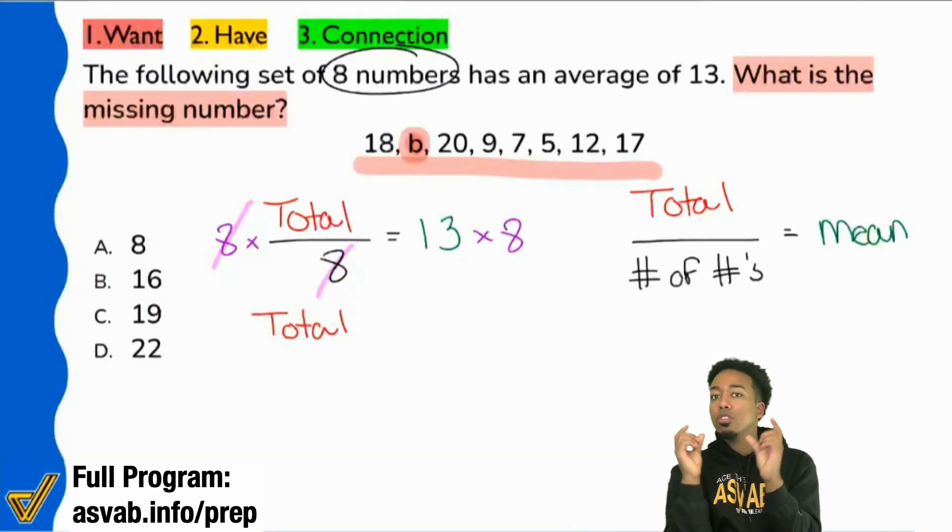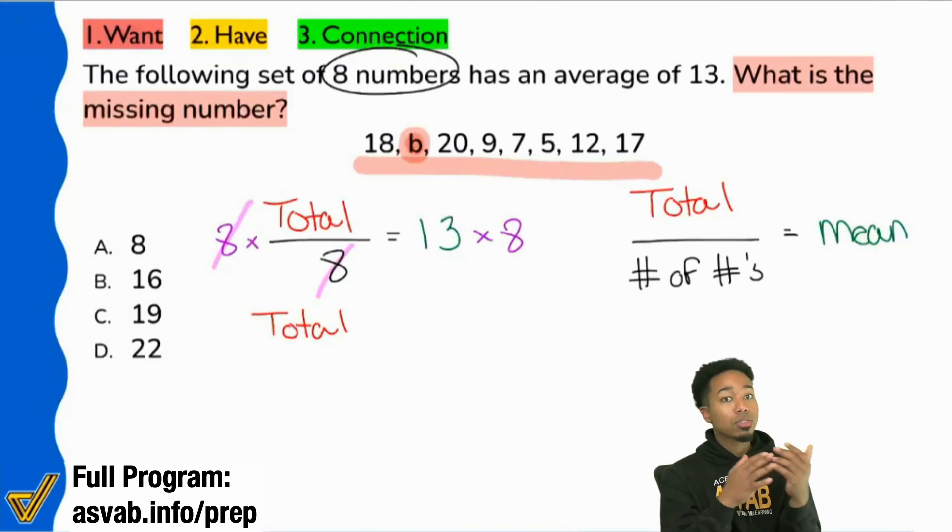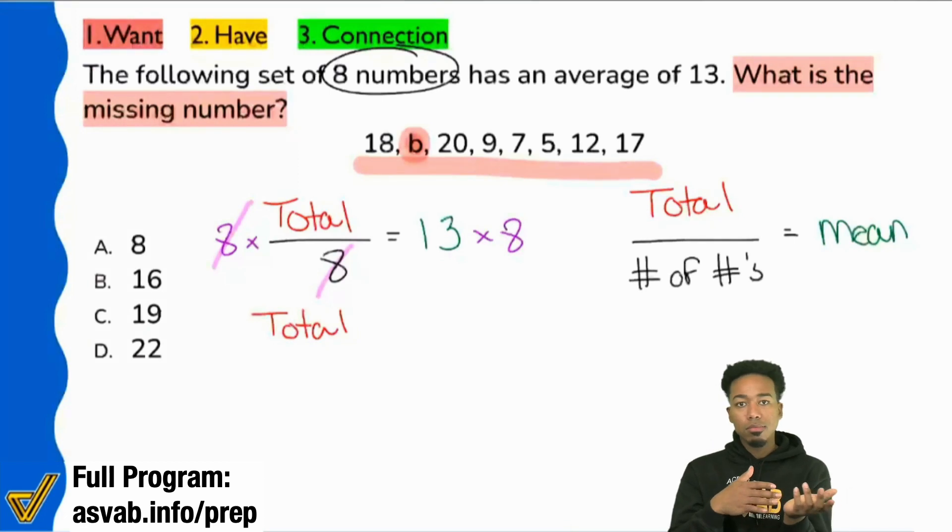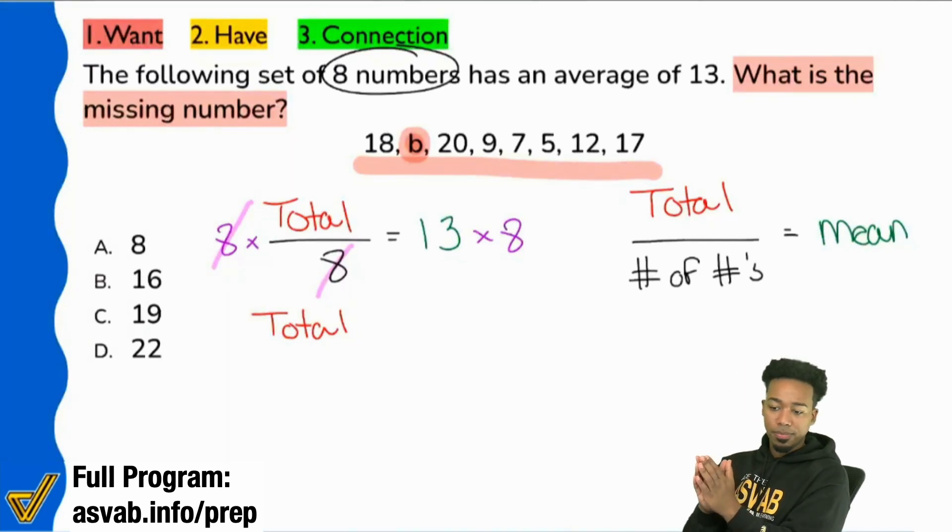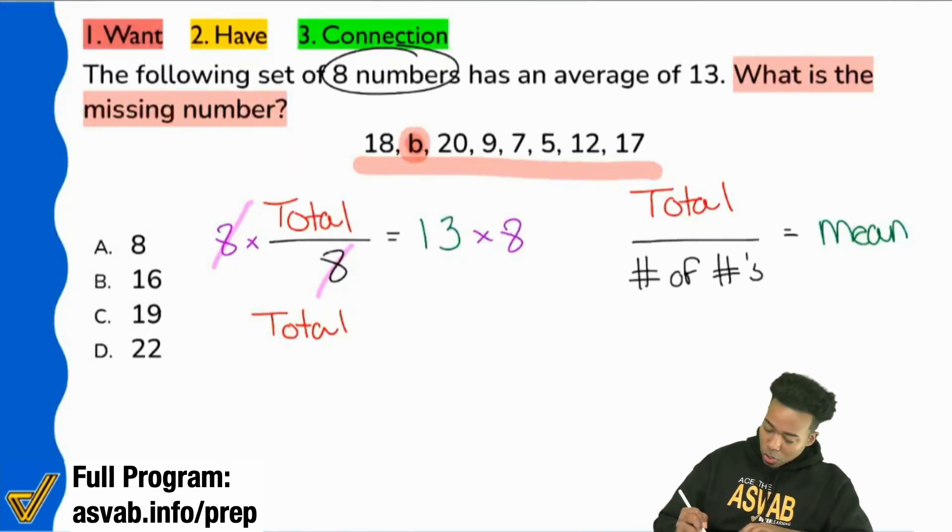That's 13 times eight. And that just takes a simple understanding of what multiplication actually is. Eight groups of 12, then eight groups of 13, just adding one more eight. That's all it is. So there it is. Total is supposed to equal 104.